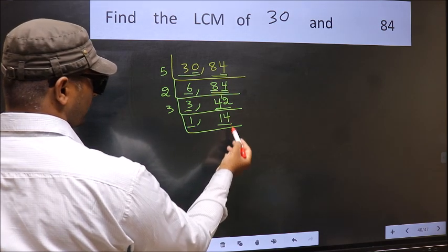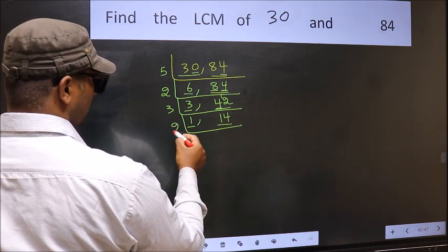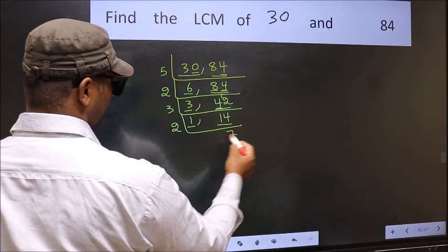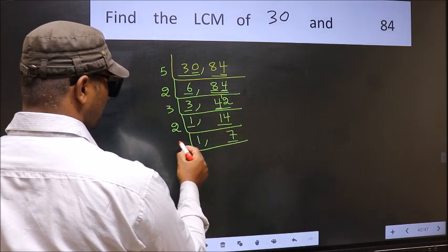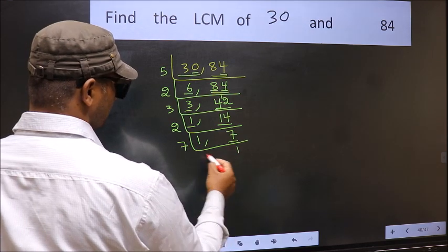So focus on the other number, 14. 14 is 2, 7 is 14. Now we have 7. 7 is a prime number. So 7, 1 is 7.